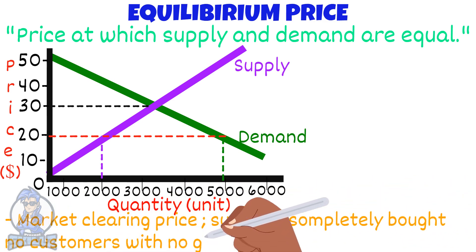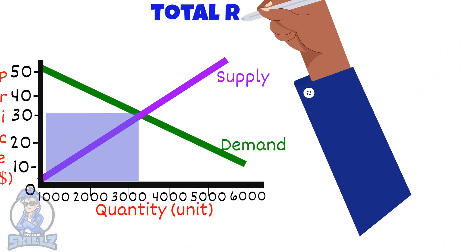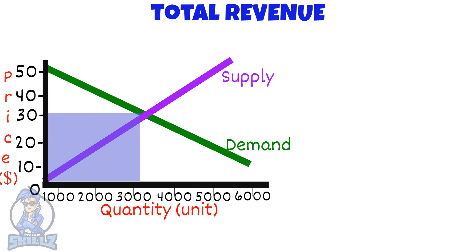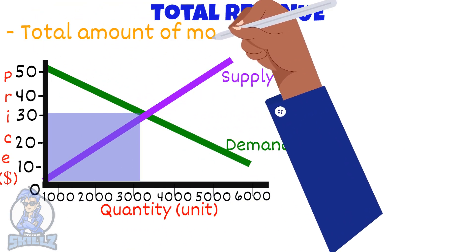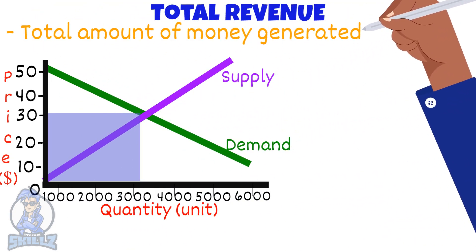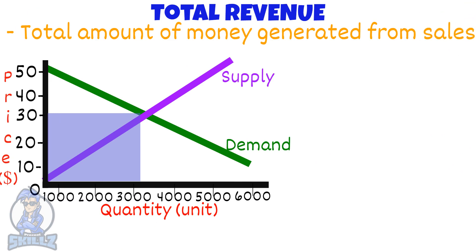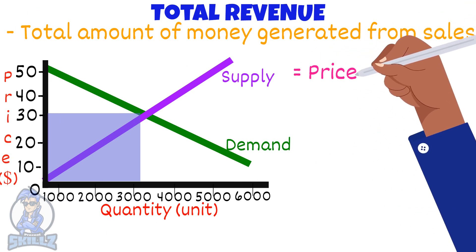There is no supply left behind. The blue box represents total revenue. Total revenue is the amount of money generated from the sale of goods. We calculate total revenue by multiplying price and quantity.